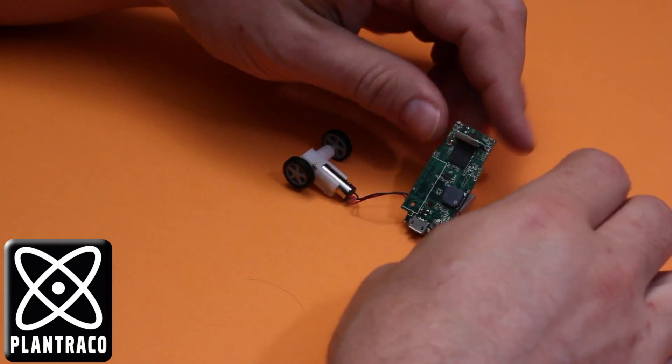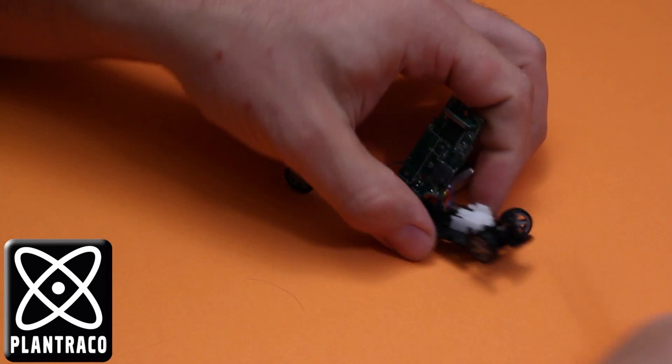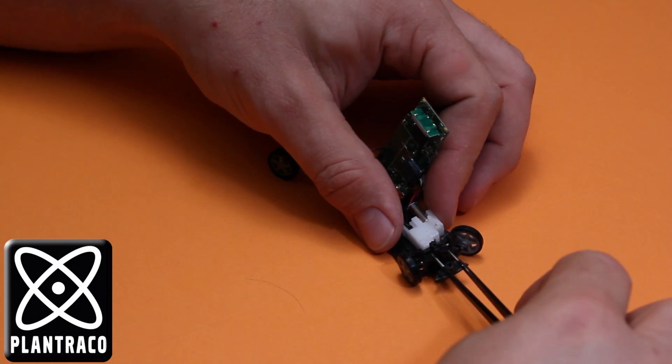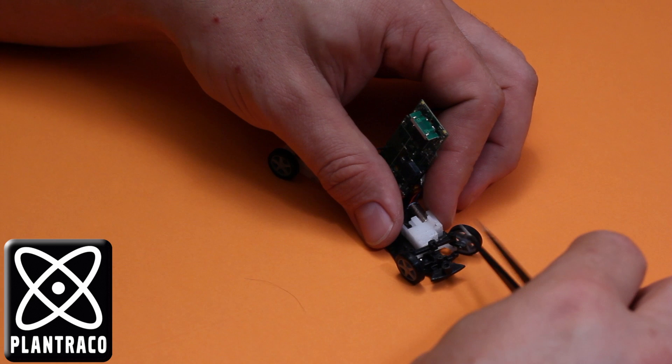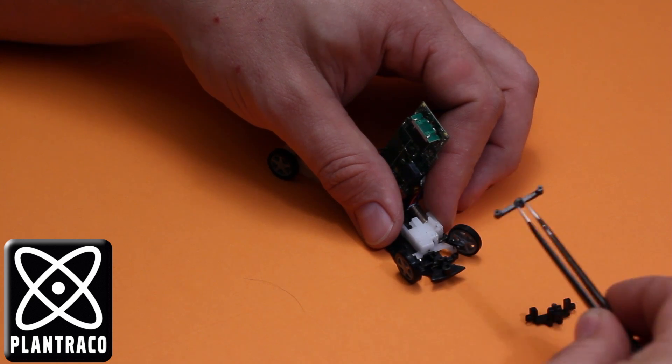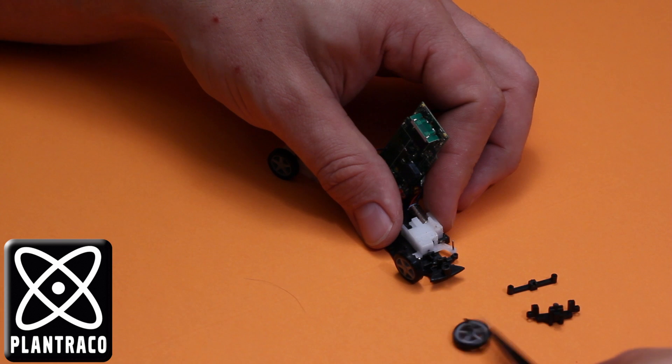So after that you should have something that looks like this. And I'm just going to get a pair of tweezers to get my fingers out of the way so you can see clearly. This part right here just lifts up. And this part lifts up. And the two wheels lift out.